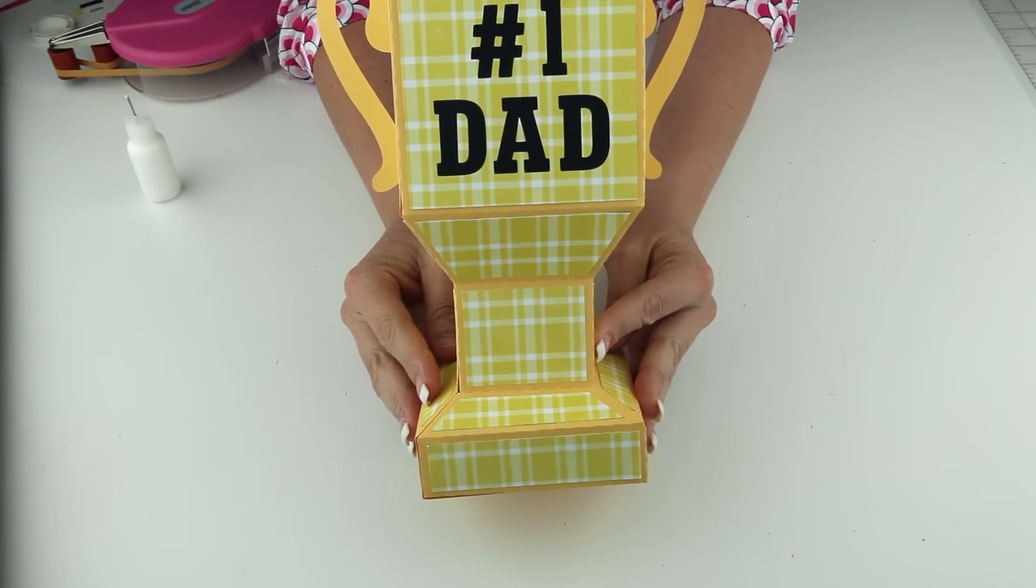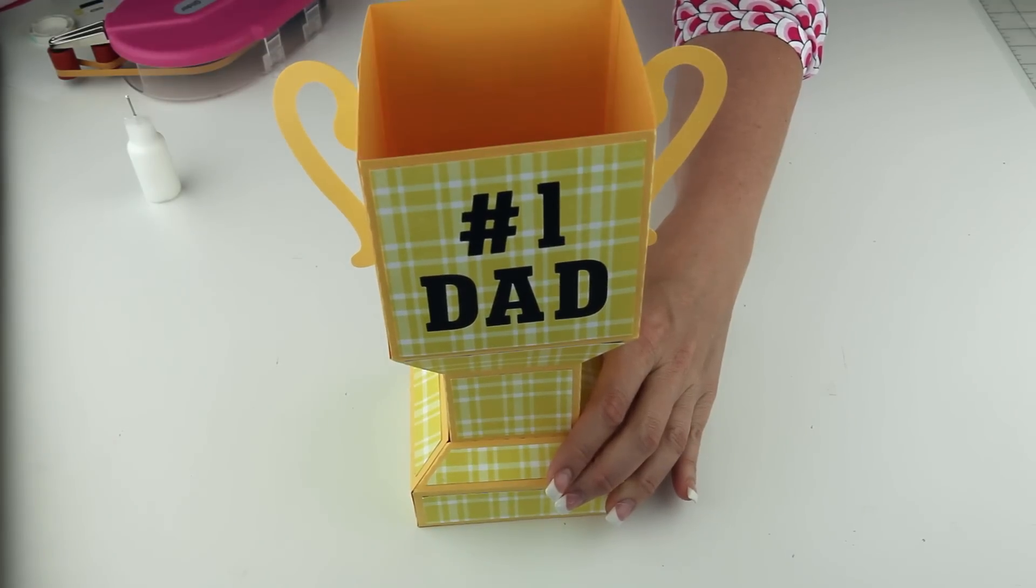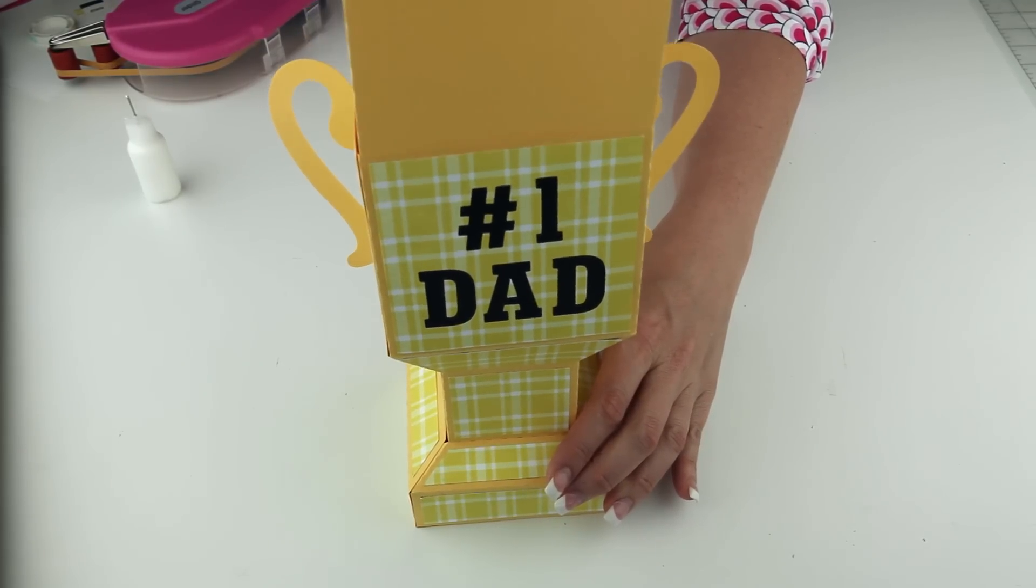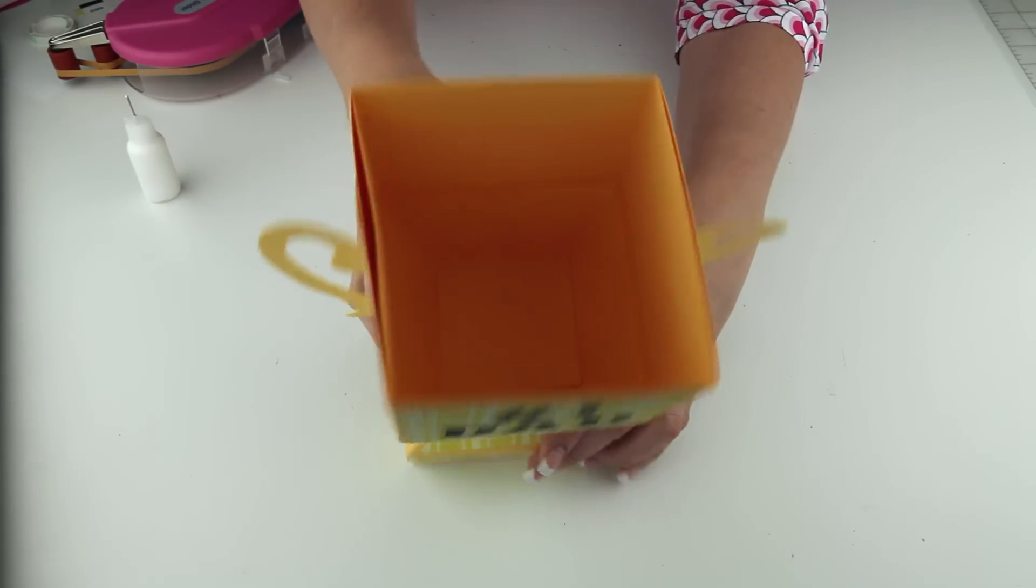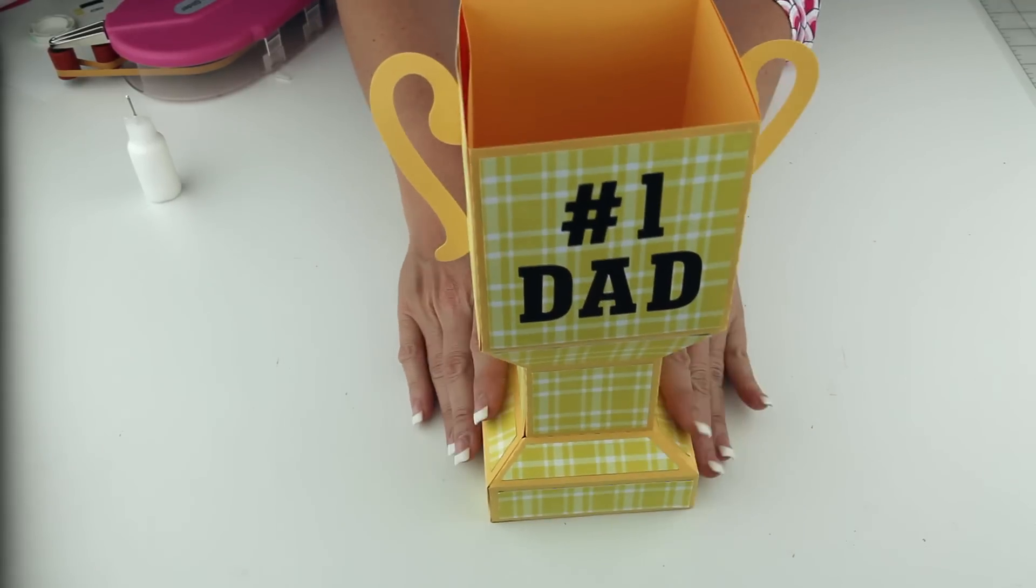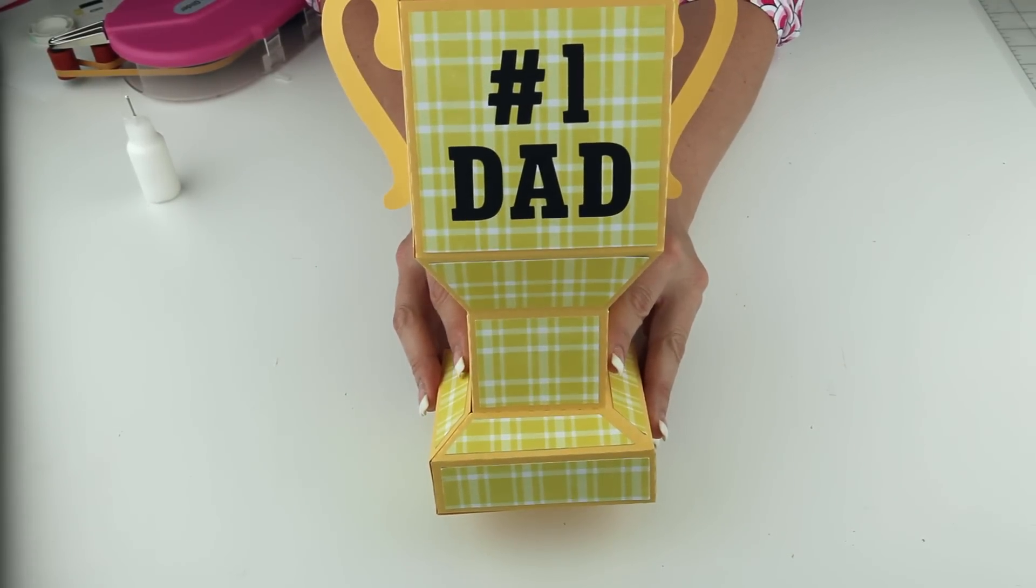So there you have it. We have our finished trophy box with our little liner that slips right inside. That makes this finish off so nicely with a finished bottom in there so you can put candy and treats in there and they do not fall all the way to the bottom of the trophy box. I hope you enjoy this. I think your dad is going to love it. Have a great day. Bye bye.